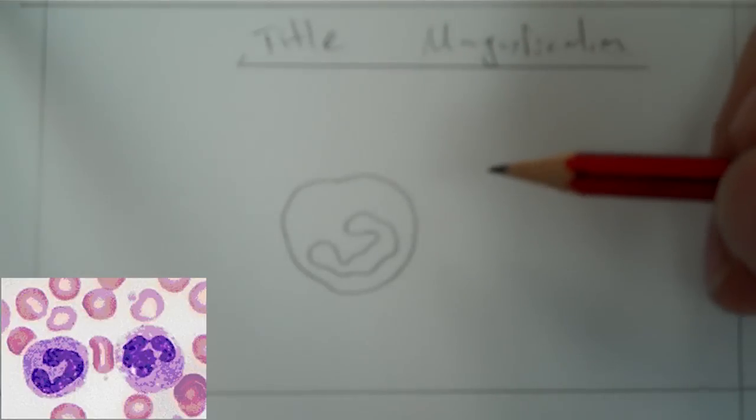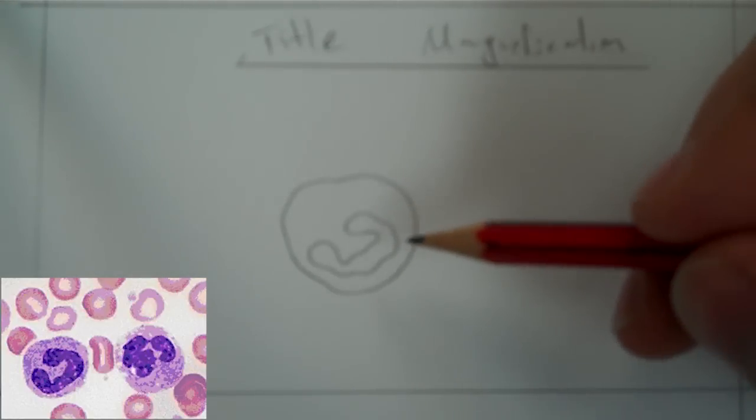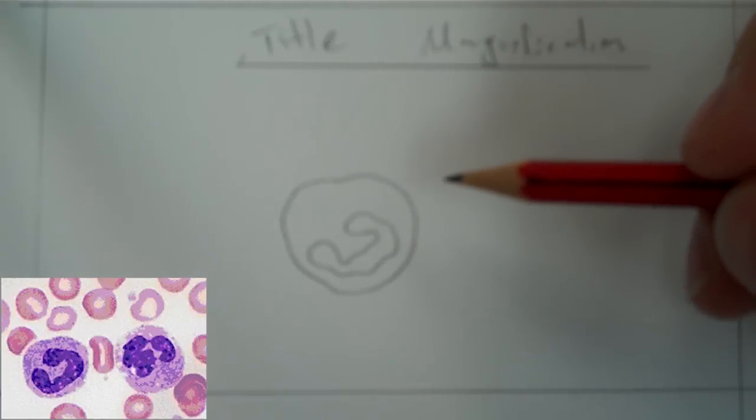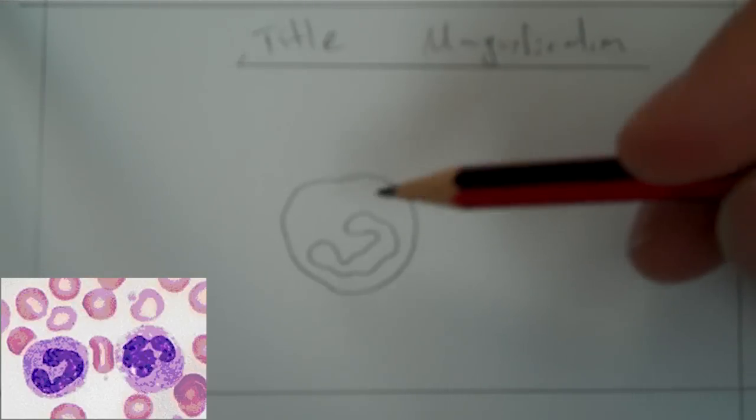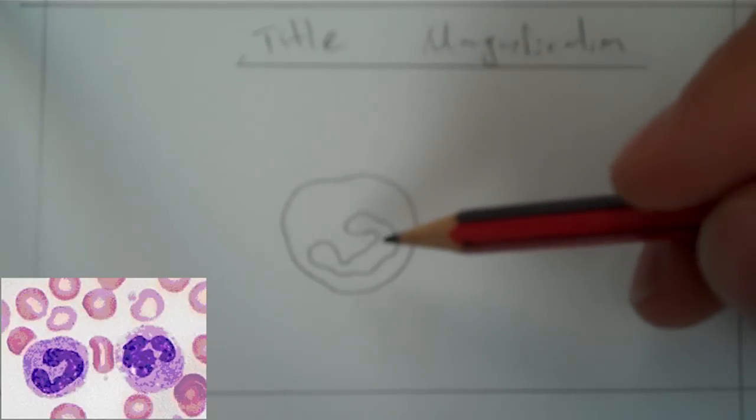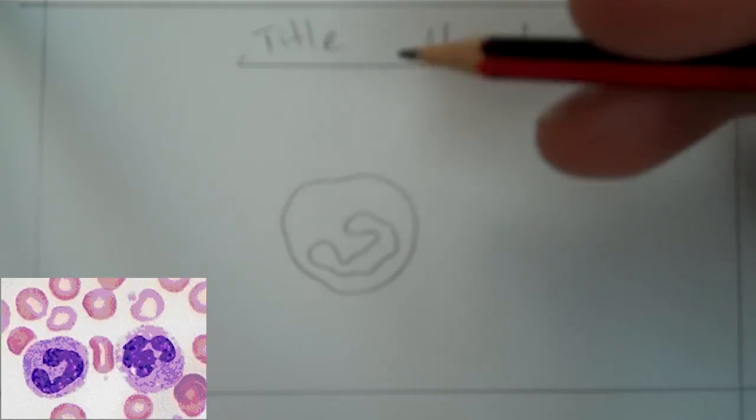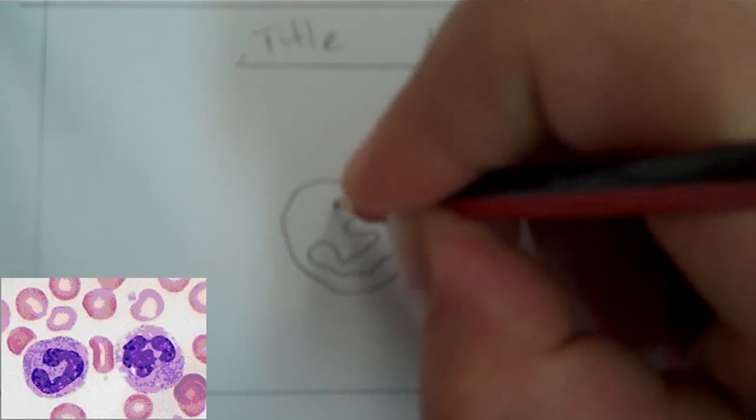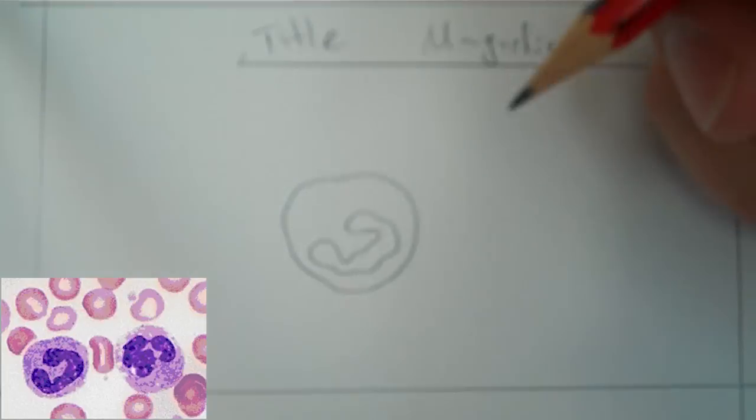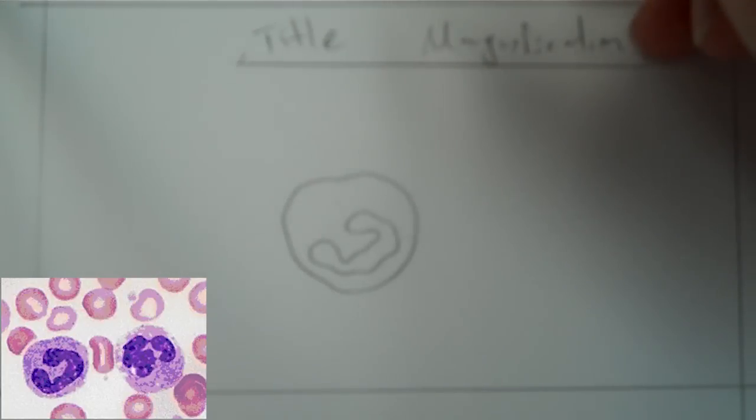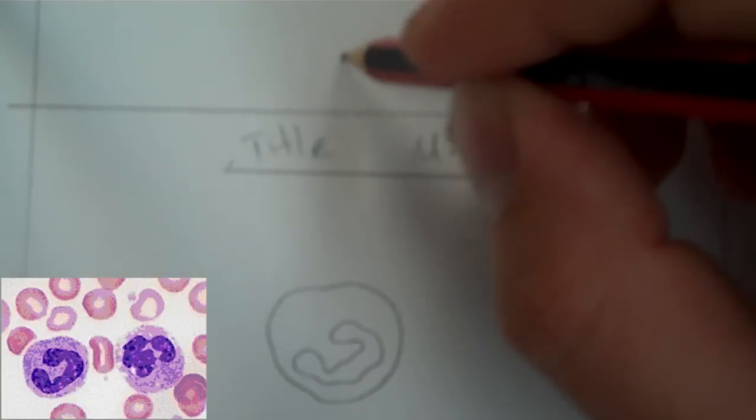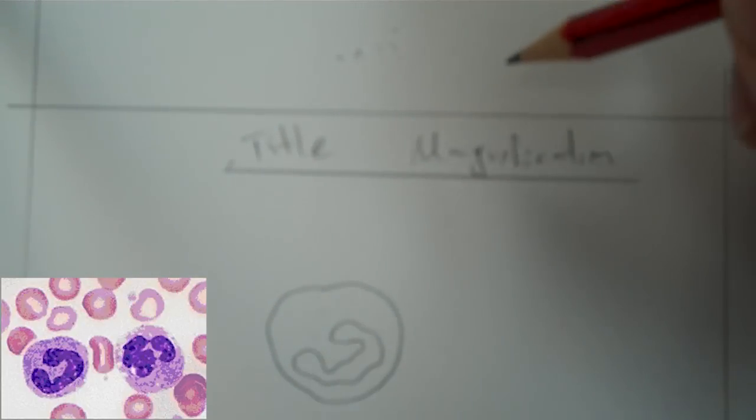Now the key thing is here a lot of students are really tempted to shade in the internal structure there. You really can't. There's no shading in biological drawings. The rest of the cell in here, it is quite granular. There's kind of little spots, so it might be a good idea to actually do a little bit of stippling. And so what I do is, rather than dot sort of like this, if you do that you often end up with little lines.